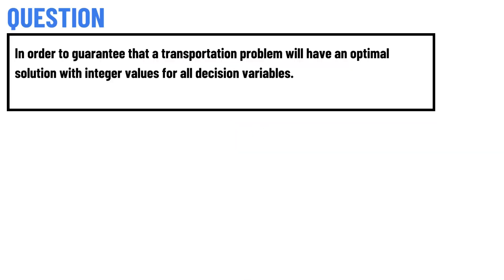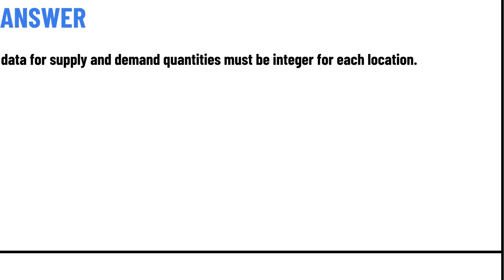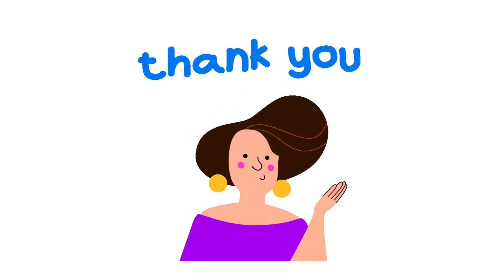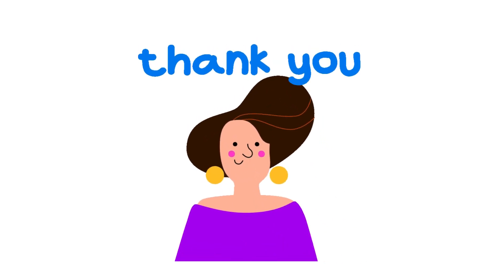Today's question is: in order to guarantee that our transportation problem will have an optimal solution with integer values for all decision variables, the correct answer is that data for supply and demand quantities must be integer for each location. That is the correct answer to the question.